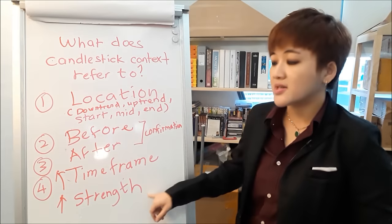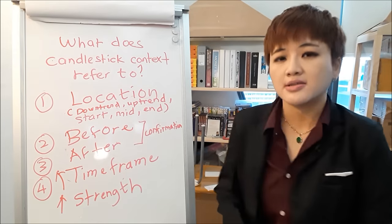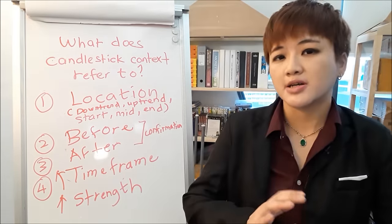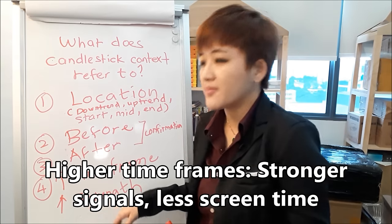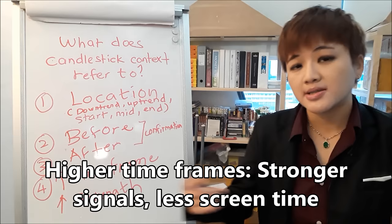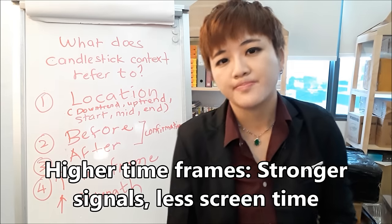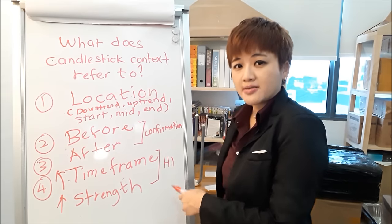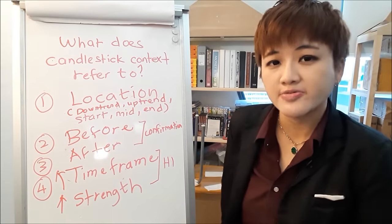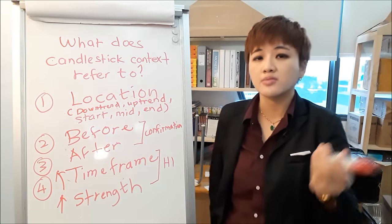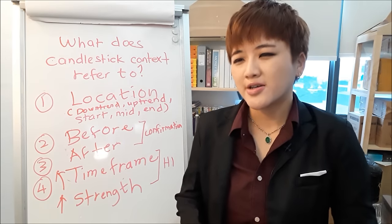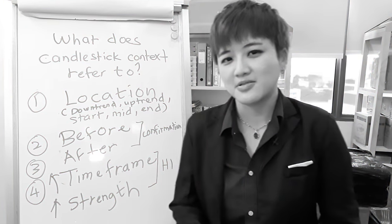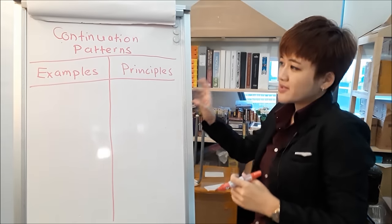The fourth context factor is timeframe. For any signal — whether candlestick pattern, breakout, moving average, or trendline — the higher the timeframe, the stronger the signal. This is why trading higher timeframes is preferred: signals are stronger and you need less screen time. To be safe, look at hourly charts and above — H1, H4, D1, weekly, monthly. The lowest you should go is M30, but that can still be quite noisy.